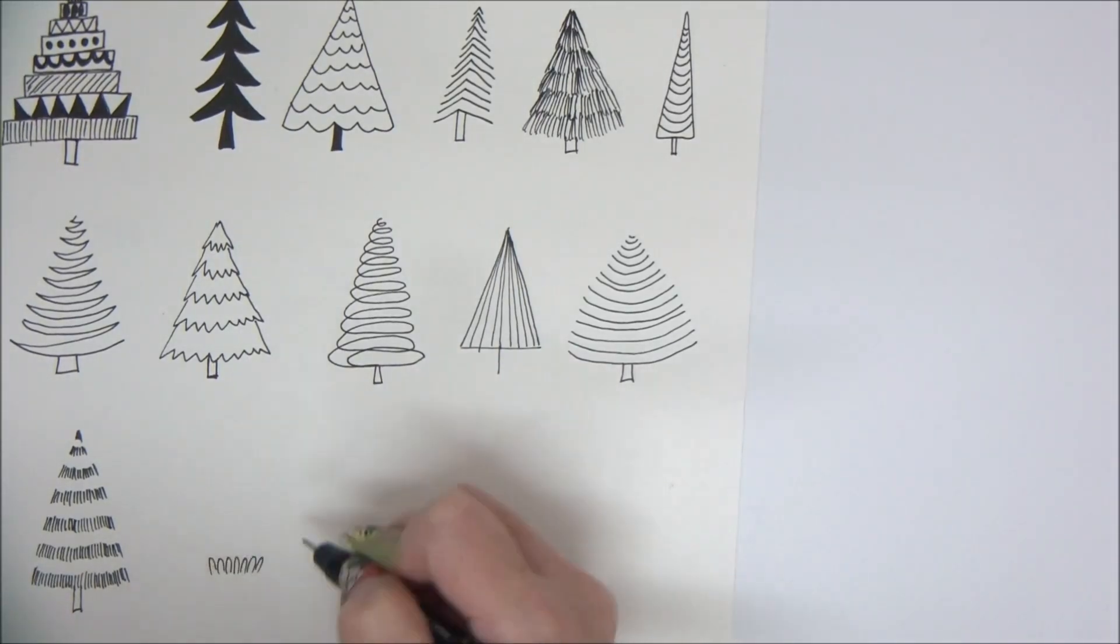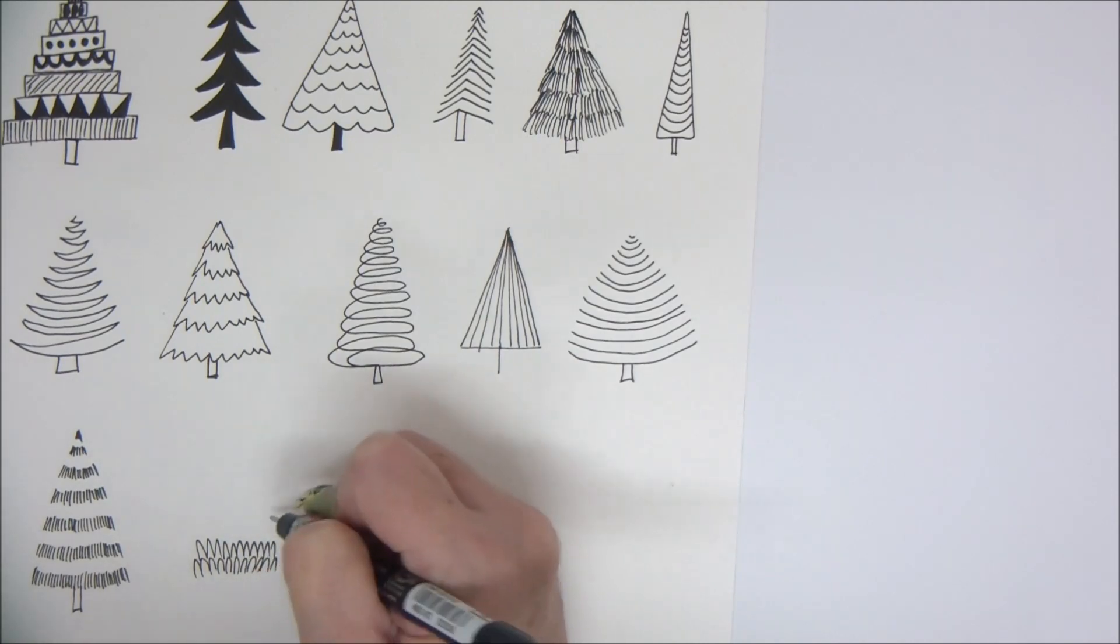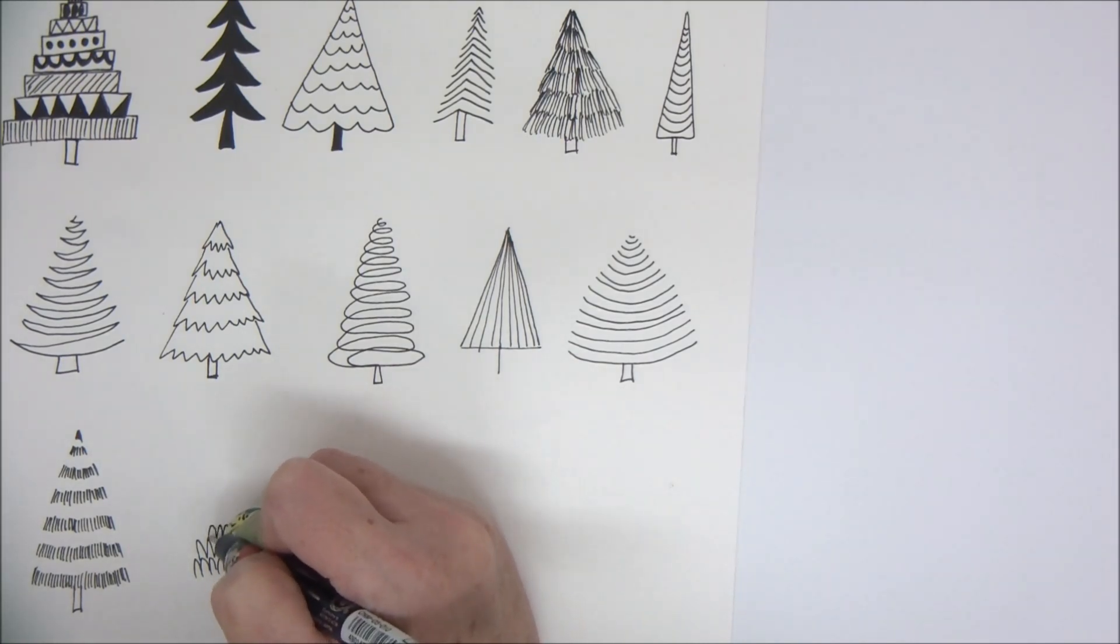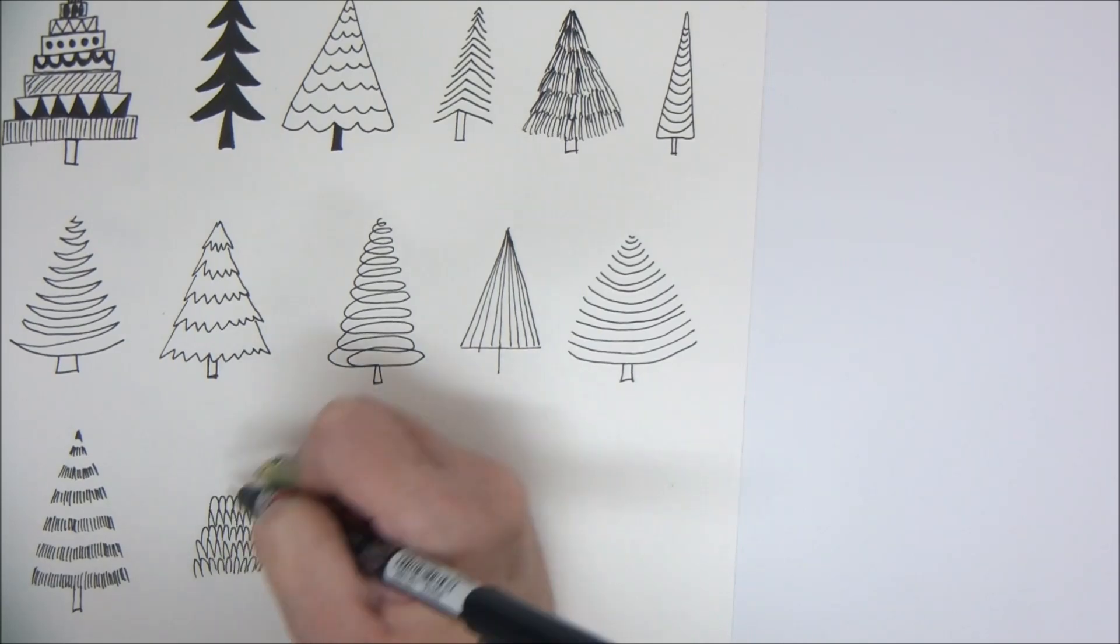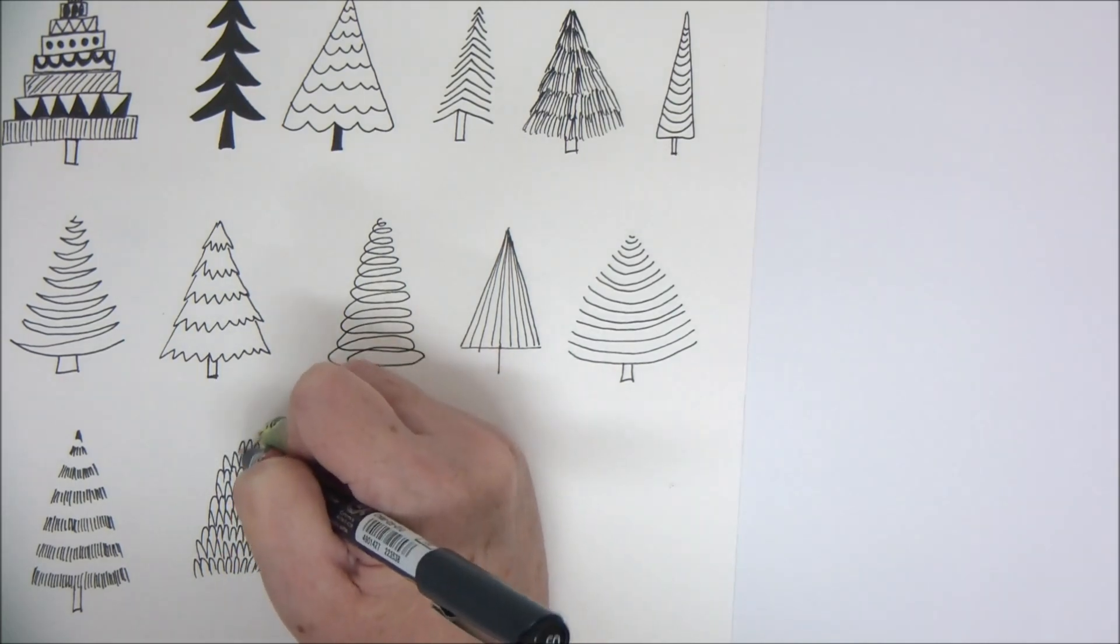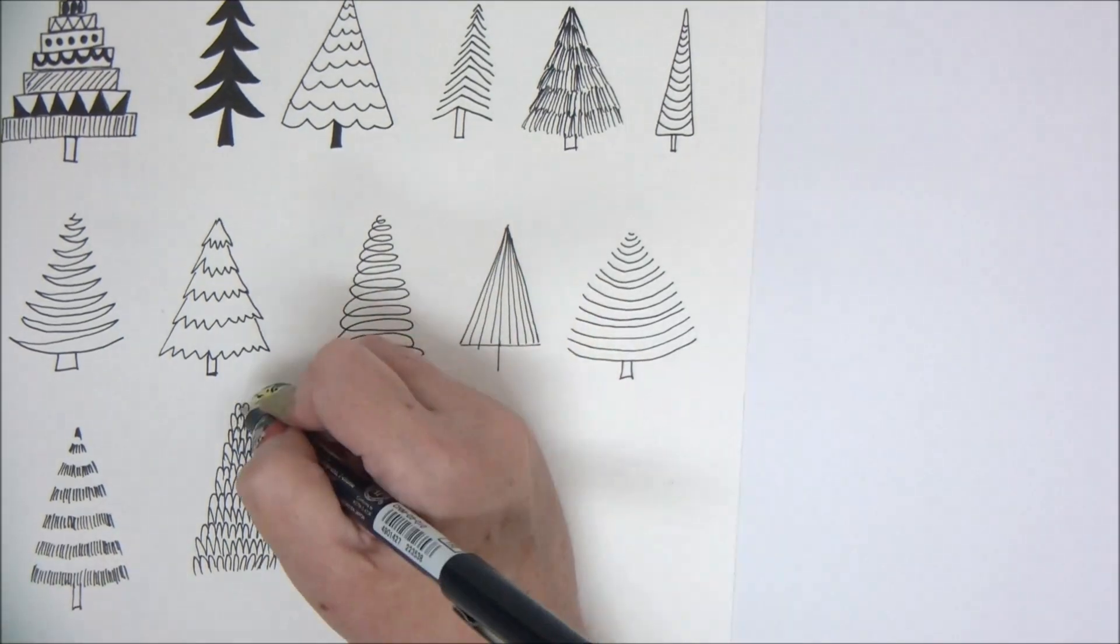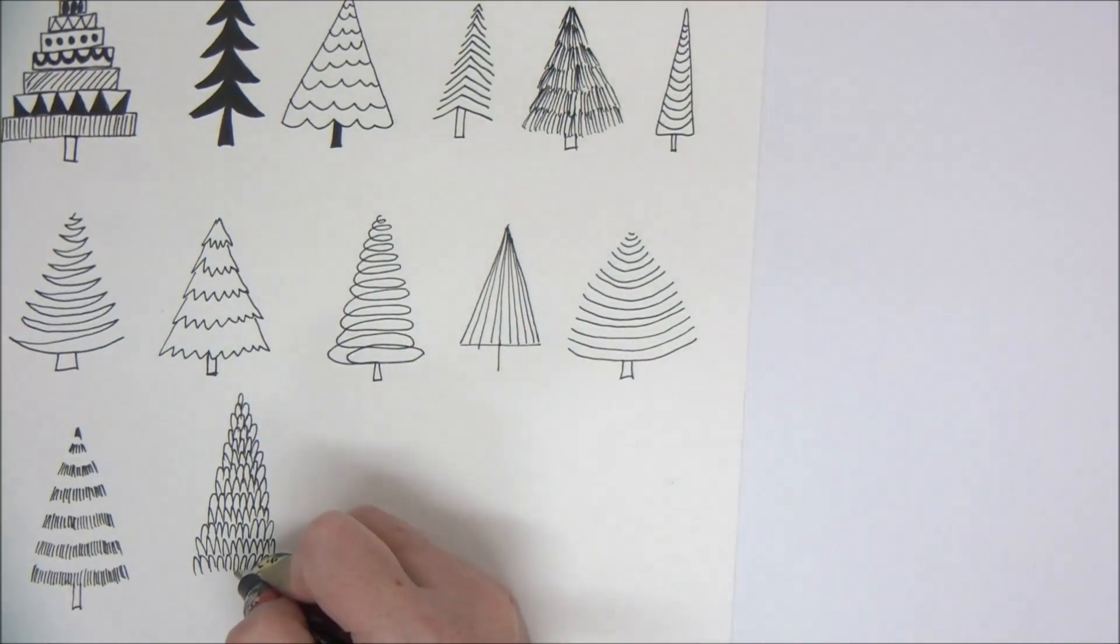Next, going to start from the bottom—do the long layer first and then go upward making narrower and narrower layers to form a triangle shape. And I'm just doing sort of oval shapes, sort of a leaf shape if you will.